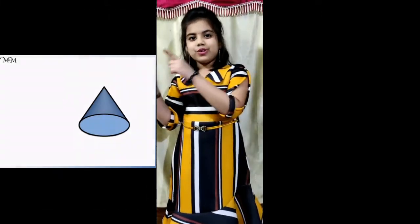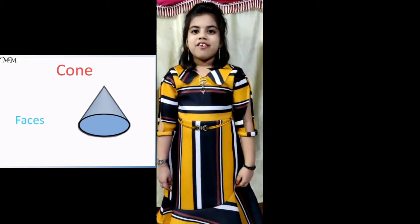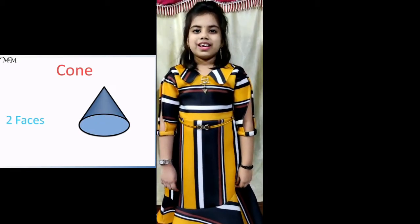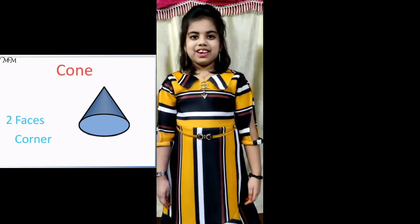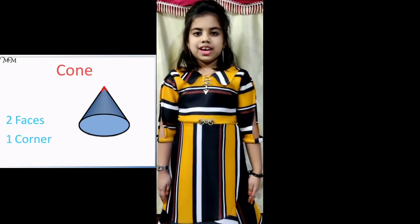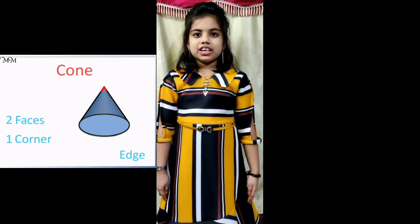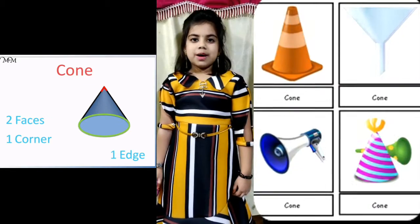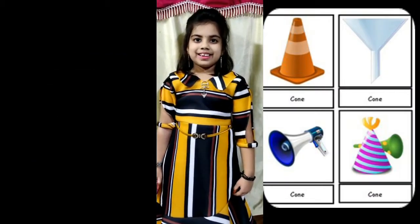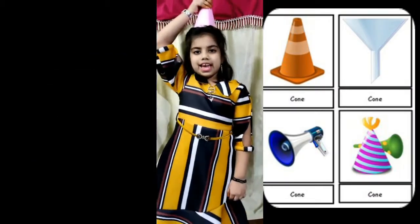The next one is a cone. A cone has 1 corner and 1 circular edge. Examples of a cone are an ice cream cone and a party cap.